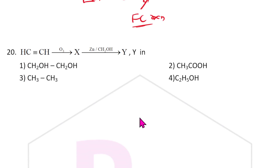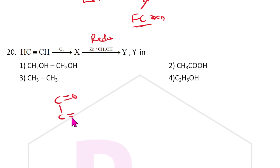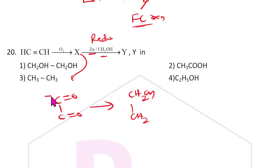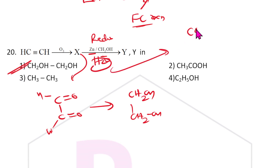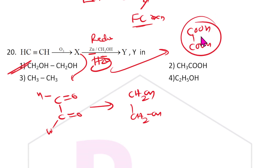Last question: CS3 — upon reaction with ozone then zinc and H2O2 (reductive ozonolysis), first the C=C double bond breaks forming an intermediate X-X, then with Zn and H2O2 you get COOH-COOH — oxalic acid. This completes the hydrocarbon chapter. Thank you, have a nice day.